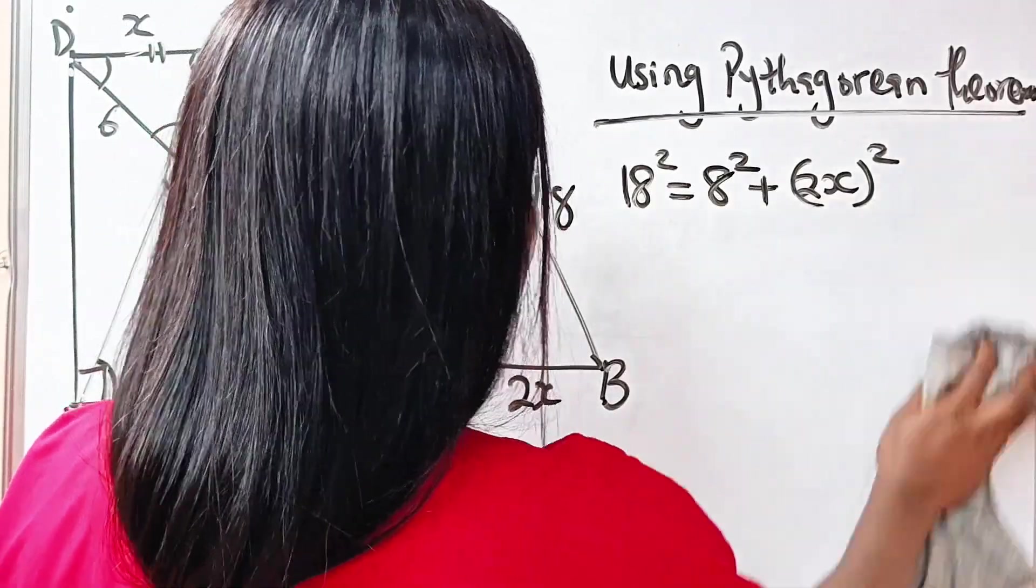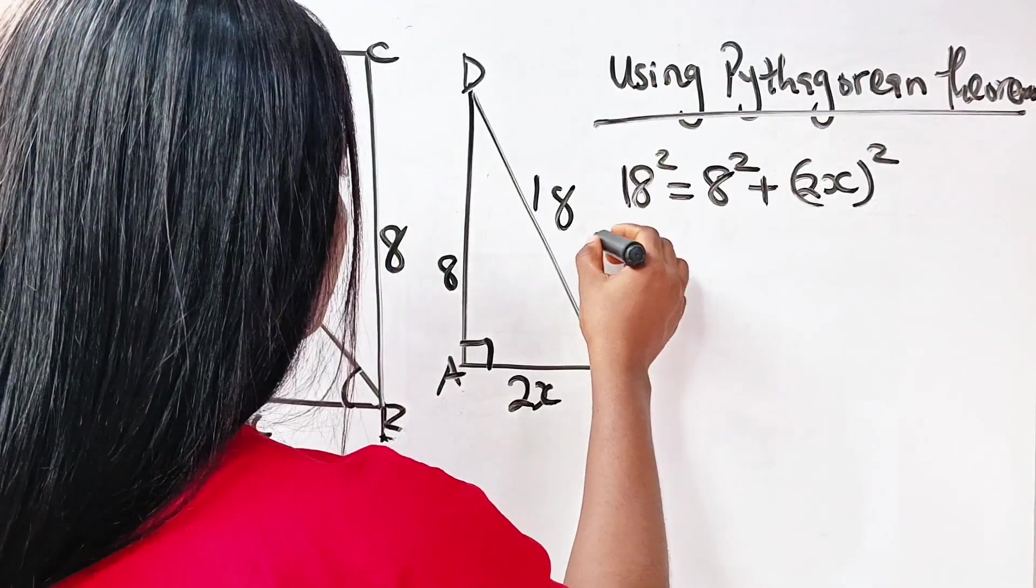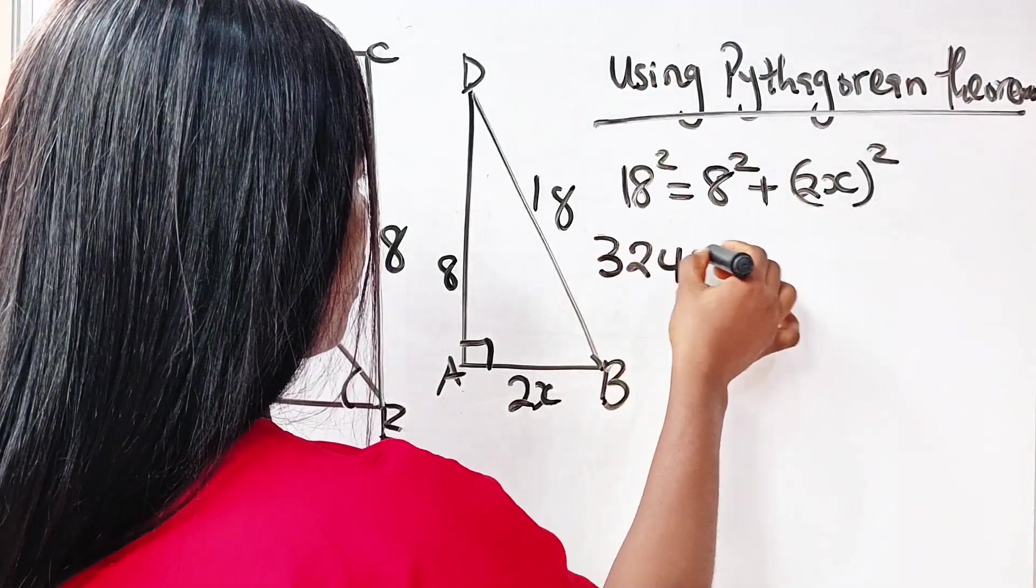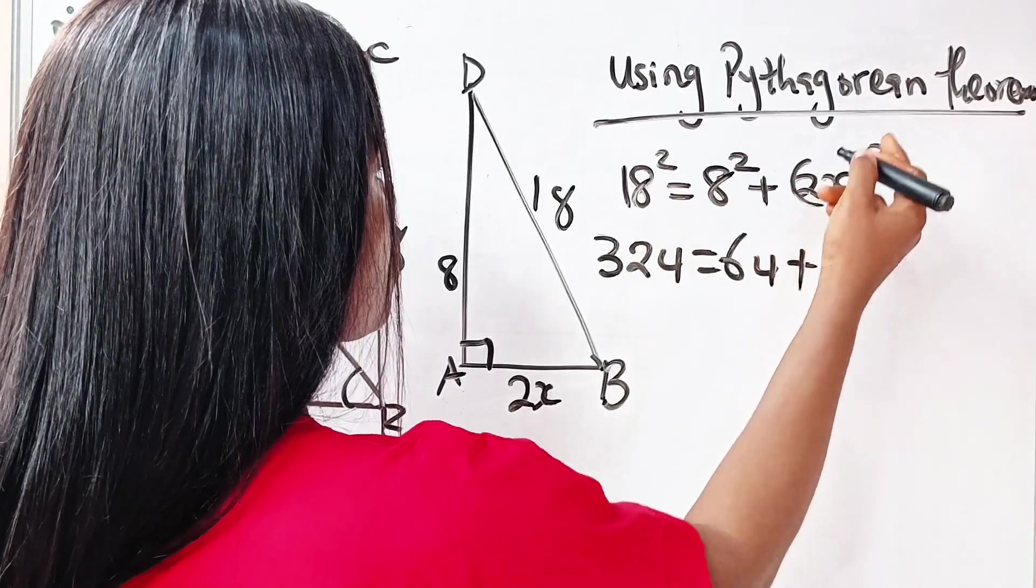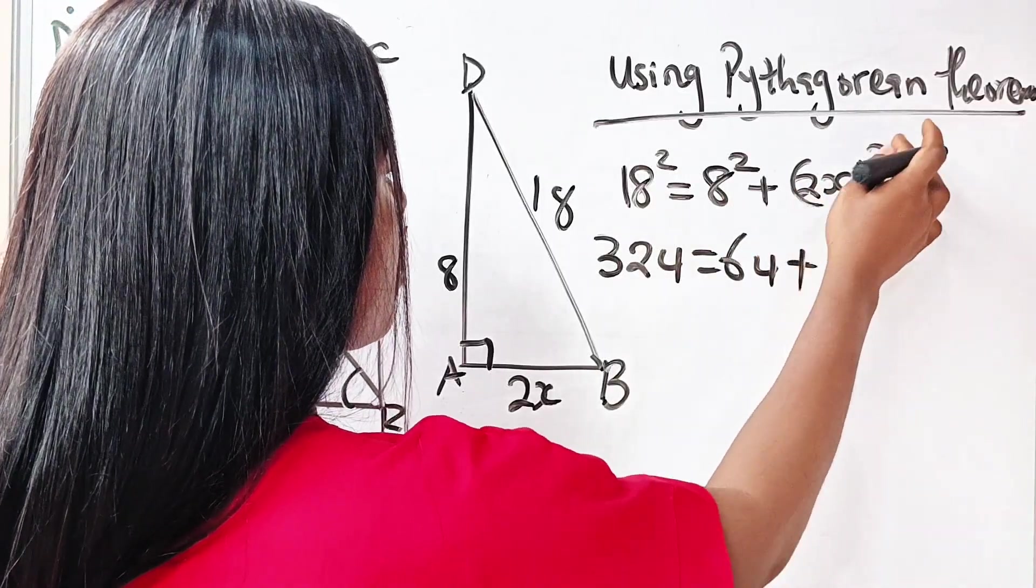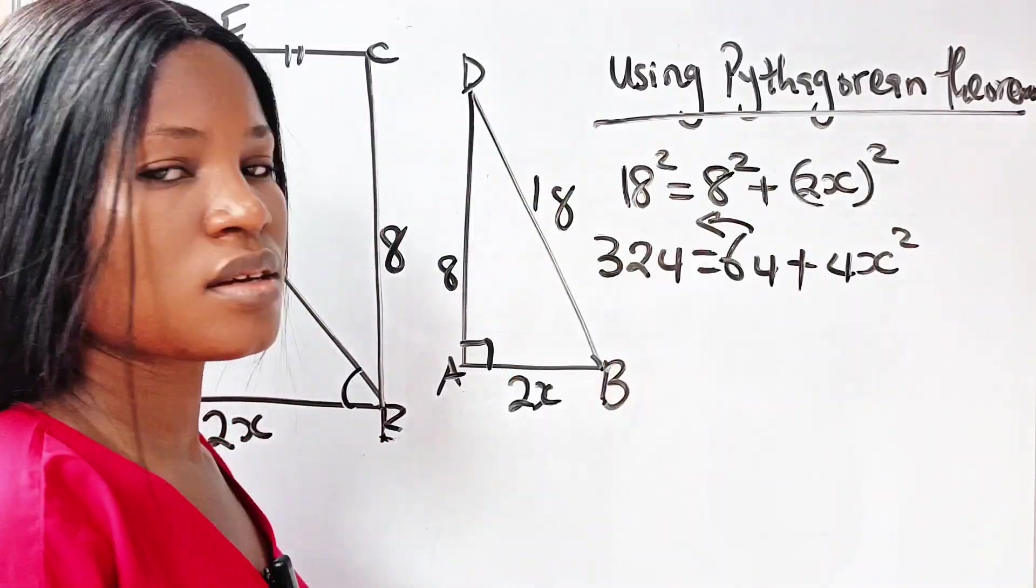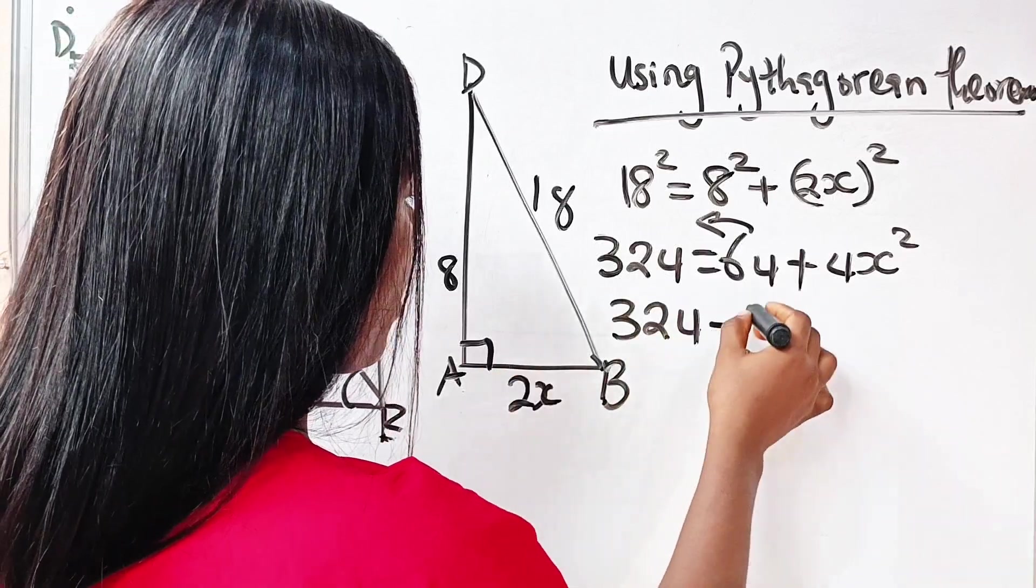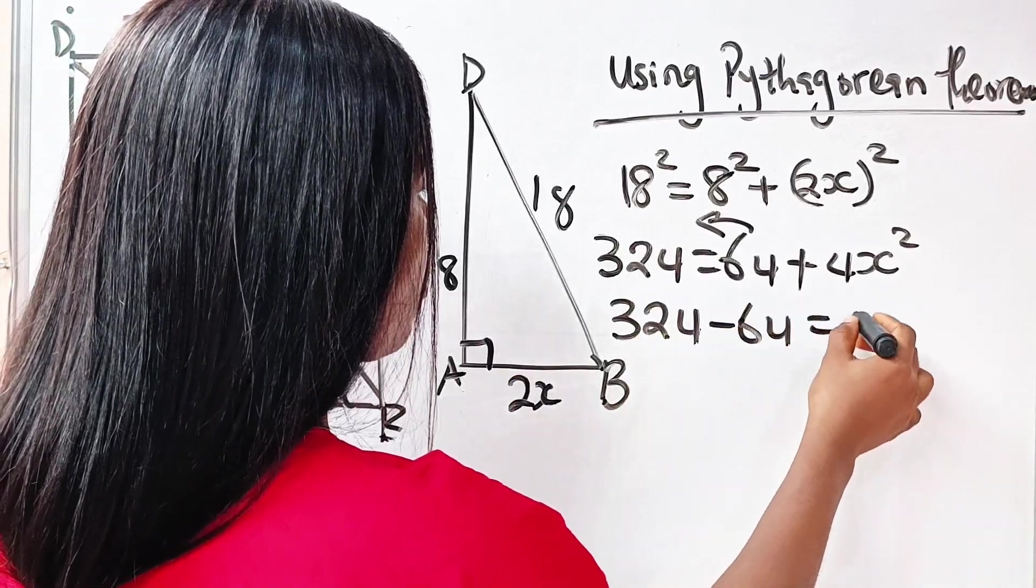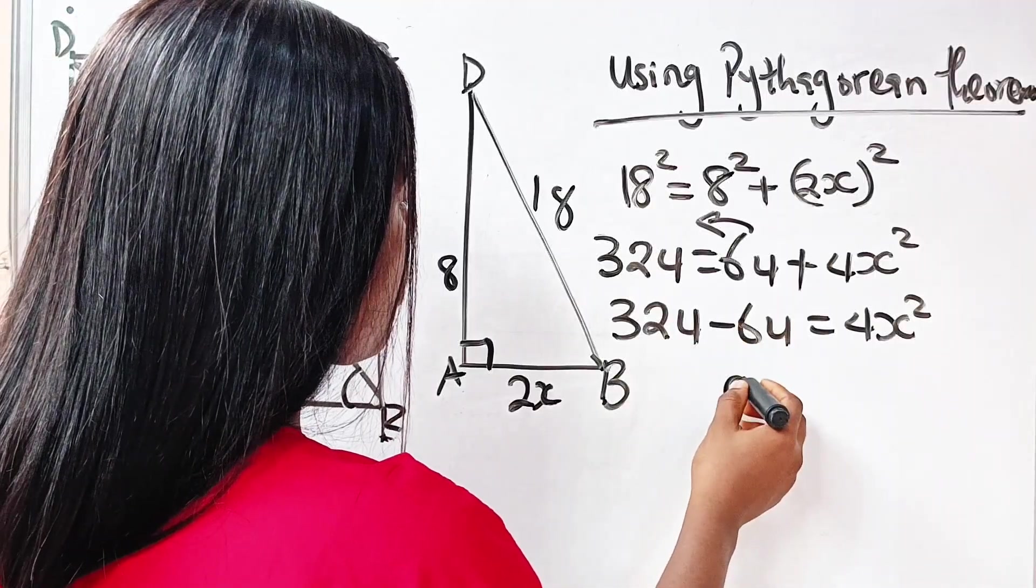324. So we go ahead and write 324 equals—8 squared is 64 plus 2 squared is 4 and x squared. So if we transfer this to this side, we have 324 minus 64 is equal to 4x squared. 4 minus 4 is 0, 12 minus 6—we bring down 2, so we have 260 equals 4x squared.